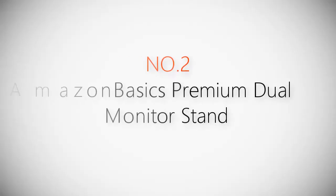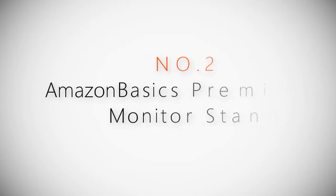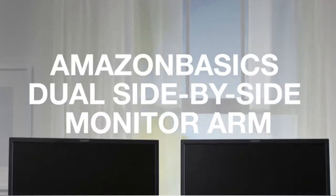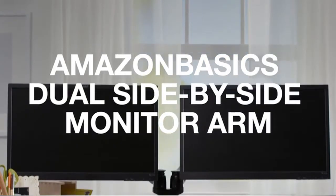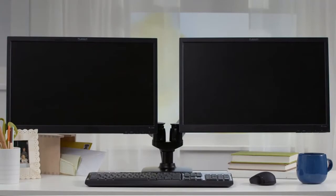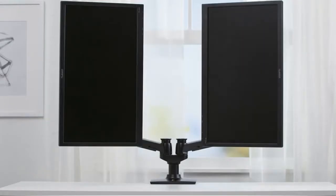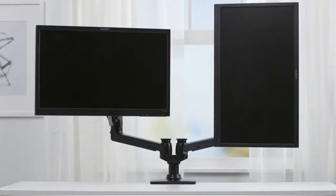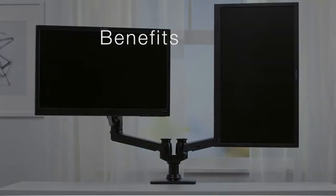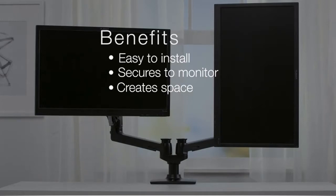Product number two: Amazon Basics premium dual monitor stand. Free up desk space with the Amazon Basics dual side-by-side monitor arms. The arms allow you to easily adjust screen position and are ideal for standing desks. If you work with two monitors, consider the benefits of the dual monitor arm. They're easy to install, secure monitors side-by-side, create more space on your desktop, you can position the monitors in a way that works for you, and they keep your cables organized.